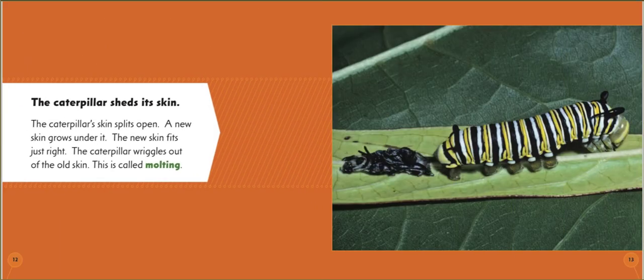The caterpillar sheds its skin. The caterpillar's skin splits open. A new skin grows under it. The new skin fits just right. The caterpillar wriggles out of the old skin. This is called molting.